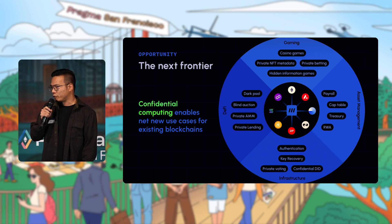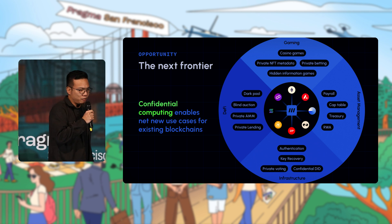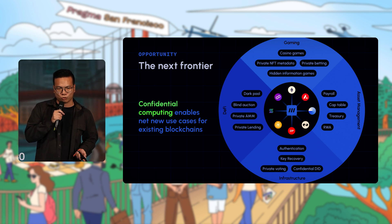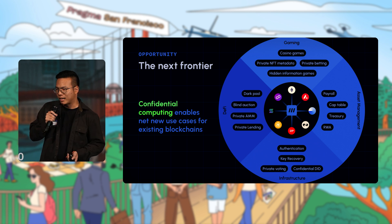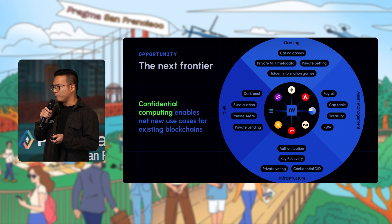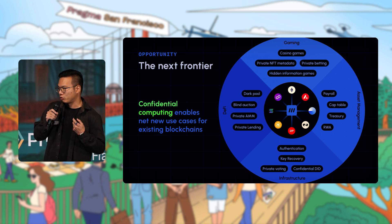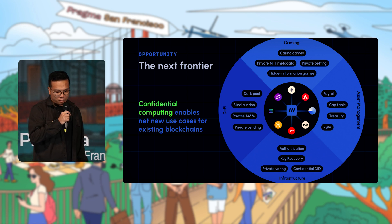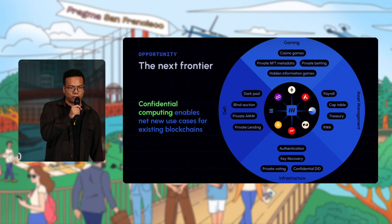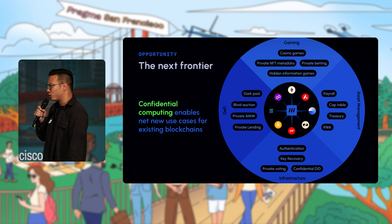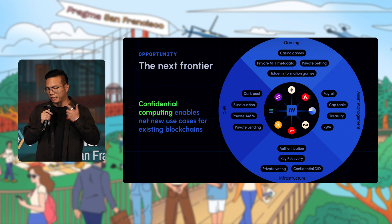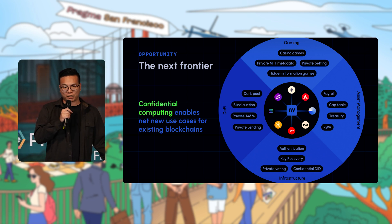This is where we can grow the pie of what's possible across different verticals: gaming, DeFi, asset management, and infrastructure. Gaming is probably one of the most interesting ones — all the fun games in Web2 have hidden mechanics, whether it's hiding your stats, resources, or cards. These are basic primitives that make a game fun, and they simply don't exist in Web3 today. For payments, payroll, cap tables, and real assets, everything is transparent today and needs some minimum confidentiality.